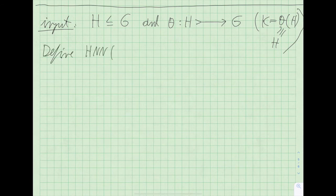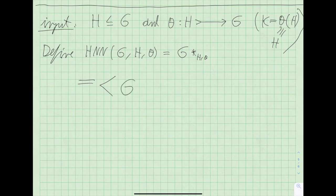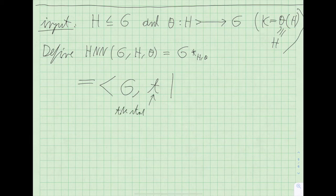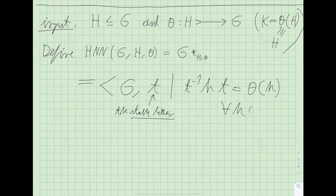The HNN extension of G relative to H and theta, written G*_H or G*, is given as follows: we take all the elements of G with all their relations, and then add an auxiliary element T — the stable letter — as a new generator. The relation is that conjugating an element h of H by T should give precisely theta(h), for all h in H.